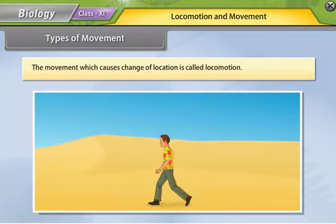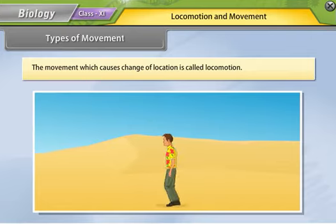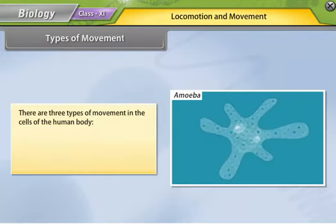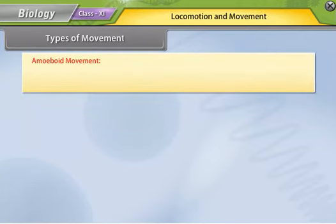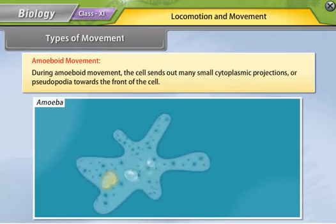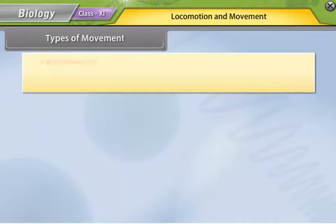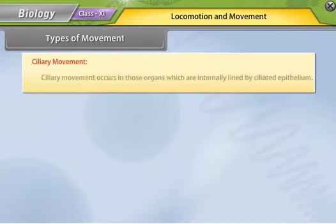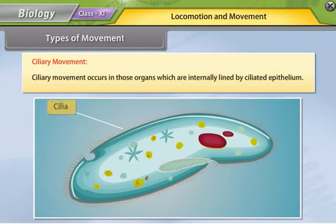The movement which causes change of location is called locomotion. There are three types of movements in the cells of the human body: amoeboid, ciliary, and muscular. During amoeboid movement, the cell sends out many small cytoplasmic projections or pseudopodia towards the front of the cell. Ciliary movement occurs in those organs which are internally lined by ciliated epithelium.